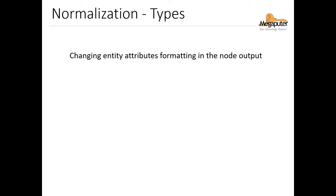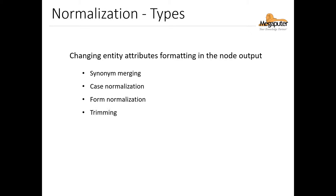The next post processor we'll talk about is normalization. This one handles some of the tasks we can perform using XPDL case and form normalization functions. The normalization post processor changes the formatting of entity attributes, and it has several different options, including synonym merging, case normalization, form normalization, trimming, string replacement, and digitizing.